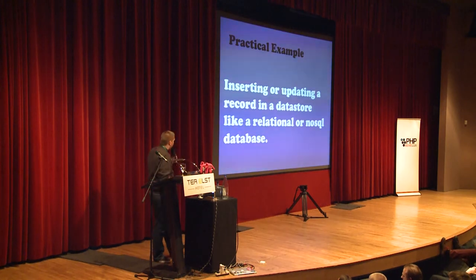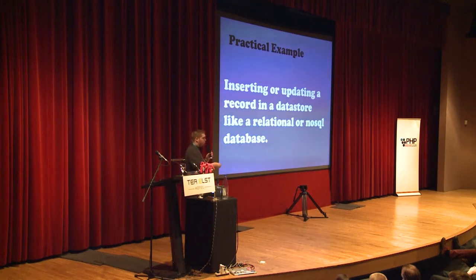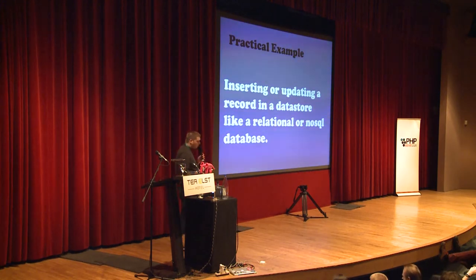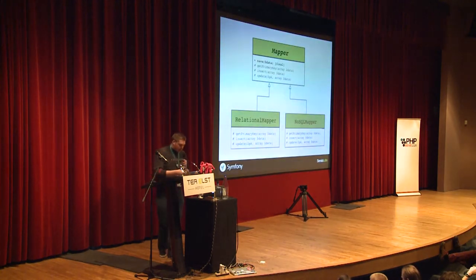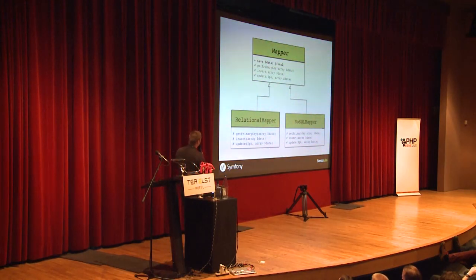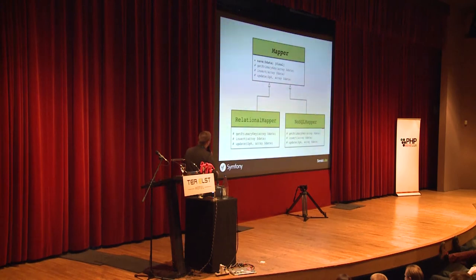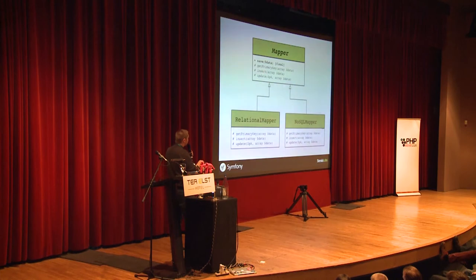For my practical example, I want to use a mapper object to map PHP objects to a database. The data store can be anything — MySQL, a NoSQL database like MongoDB, Memcache, or Redis. The saving process will be different based on the data store. I define a base mapper class which contains my template method — the save method — which is public and, importantly, final. This method defines the algorithm to save an object to the data store, and uses three protected methods. Since it's final, I can't override it in subclasses, but I can override just those three methods.